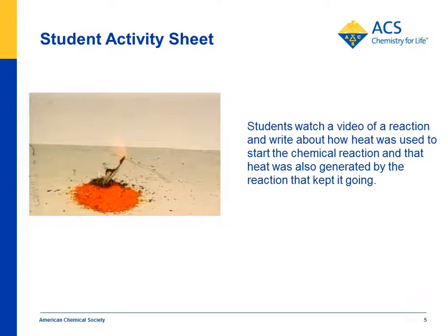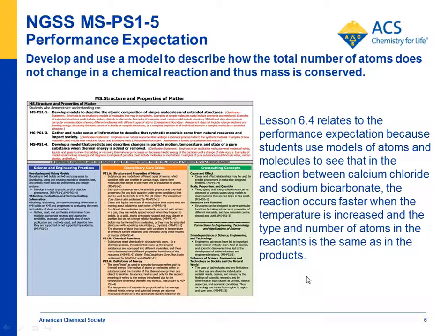Even that process can release energy and keep the process going, but that will come later. If you're in an NGSS state, there's a performance expectation — MSPS1-5 — which says: develop and use a model to describe how the total number of atoms does not change in a chemical reaction, and thus mass is conserved. You can show students the atoms in the reactants and the atoms in the products and show that mass was conserved. This also shows that heat increases the rate of the reaction, and that atoms have to have enough energy in order to react.